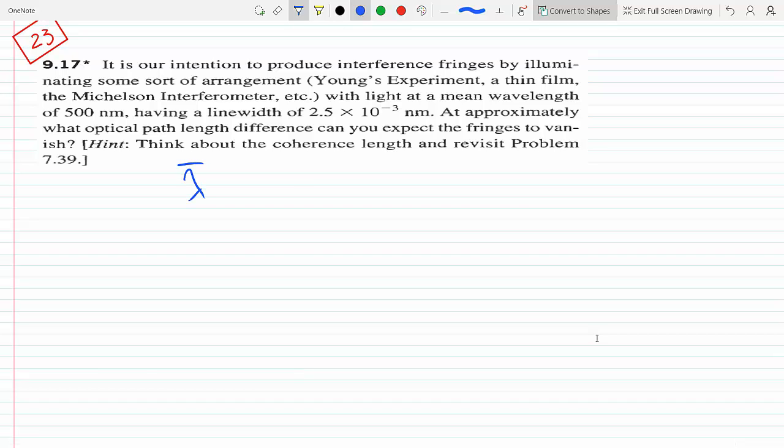Lambda equals 500 nanometers, and we have a line width, change in lambda zero, equals 2.5 times 10 to the minus 3 nanometers, and we need to find the optical path difference where they can vanish.